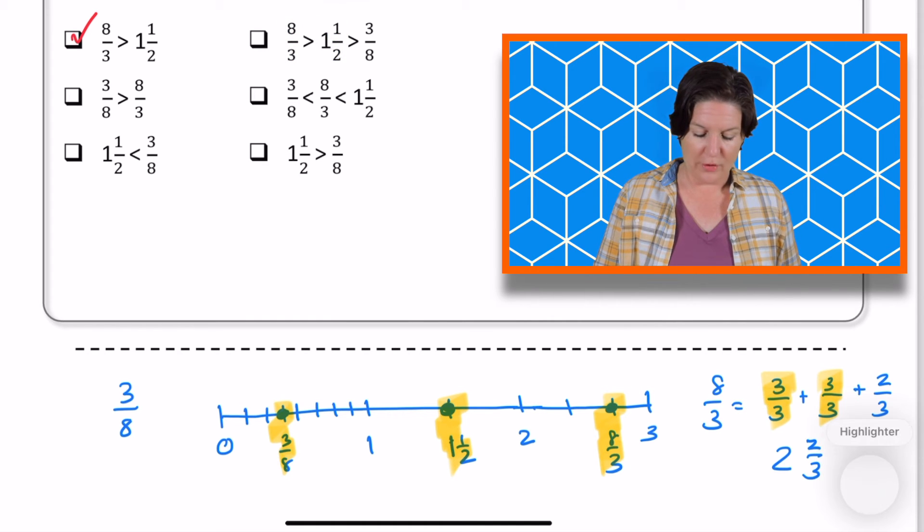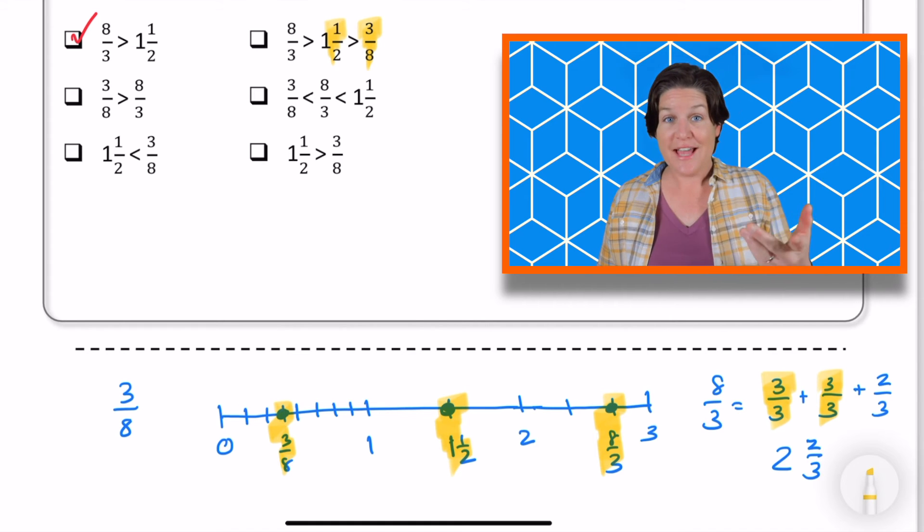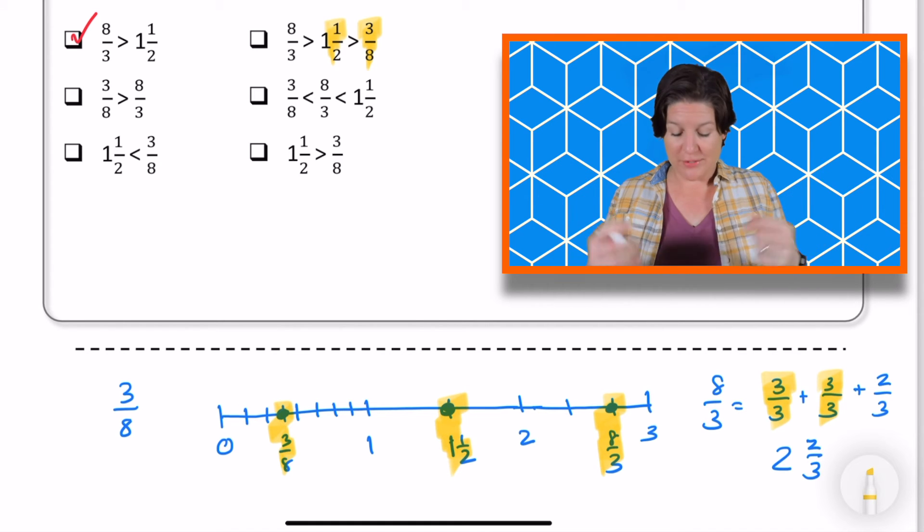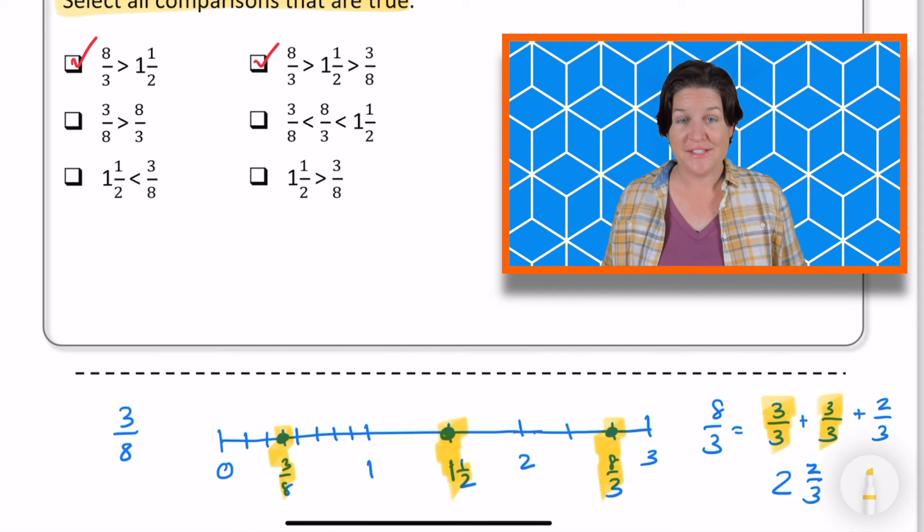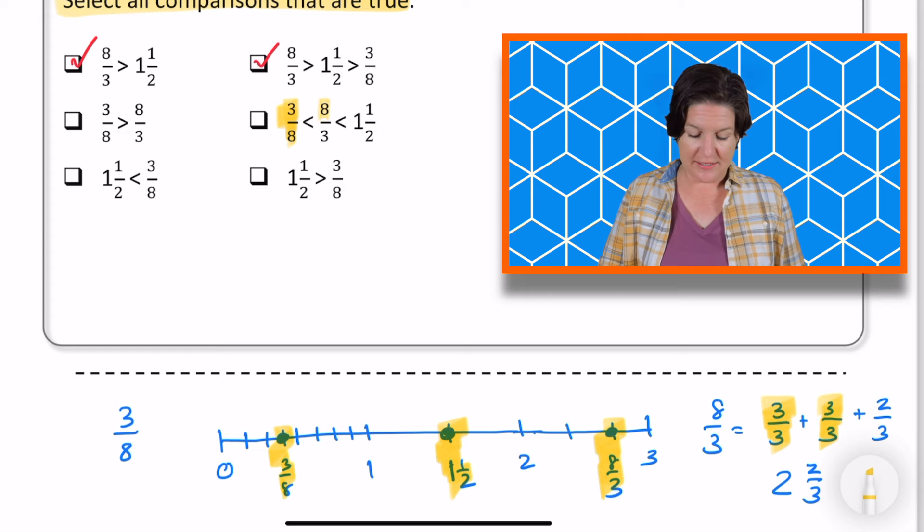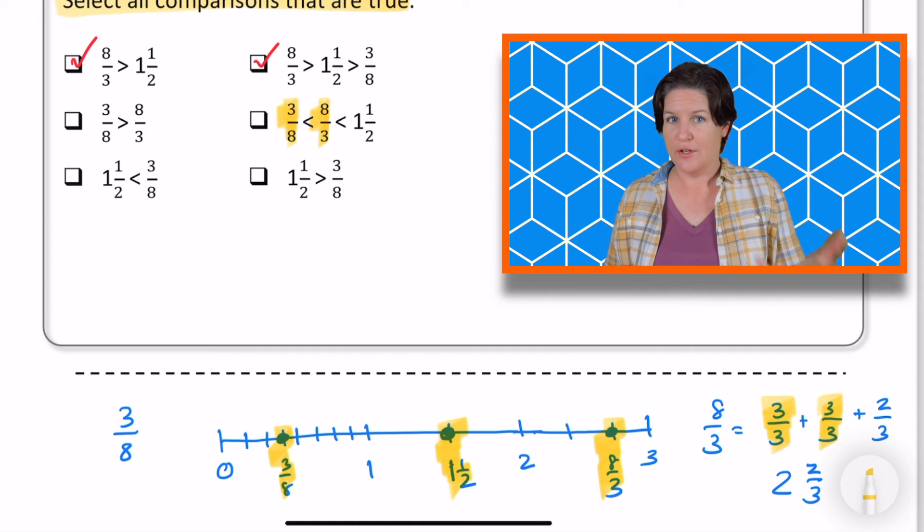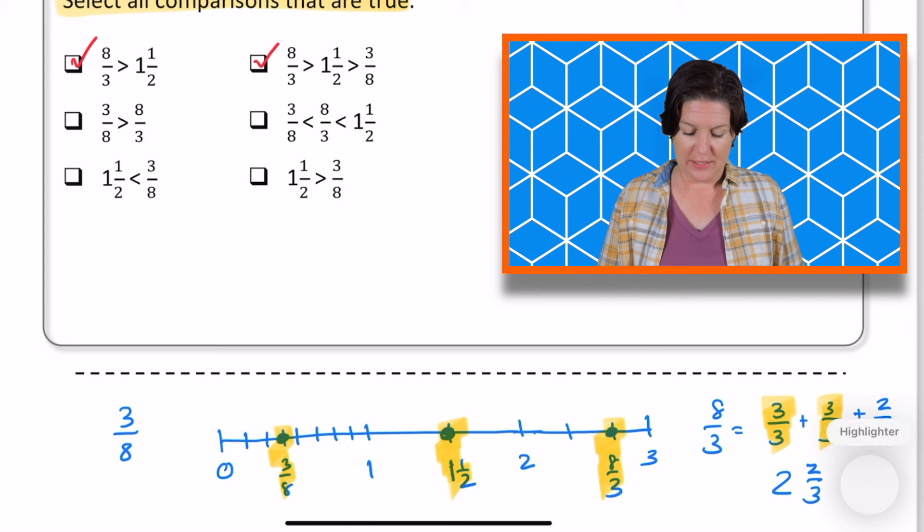All right. And then we're looking at one and a half. Is that greater than three eighths? Yes. So we can go ahead and keep this one. This is a great answer choice. There we go. All right, let's take a look at the next one. It says three eighths is less than eight thirds. What do you think? Is that true? That is true. So, so far we're looking good.